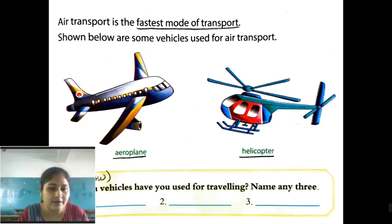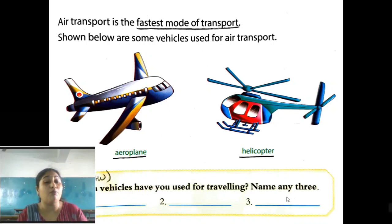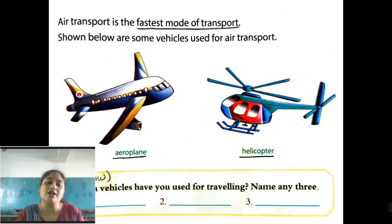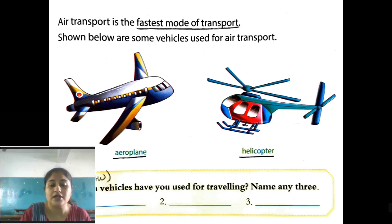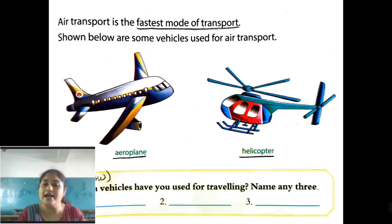Students, here one box is there and you have to do this in your homework. These are the basic vehicles which are used for travelling — name any three that you have used or that seem easy to you, and write them here.